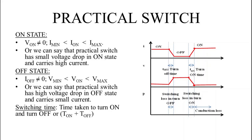From the waveform, during the on state the switch carries finite current and has a very small voltage drop across it, while in the off state it carries very small current and has a finite voltage drop. Power losses, which are the product of voltage and current, are very small during on and off states individually. However, during the turn-off transition, both current and voltage are considerable, so power losses are considerable.